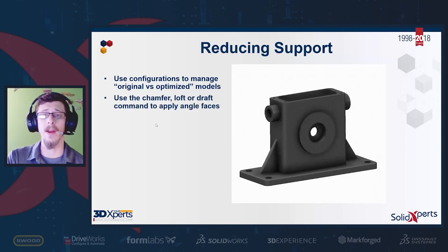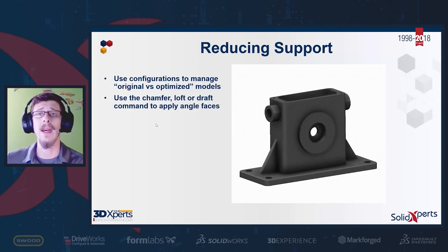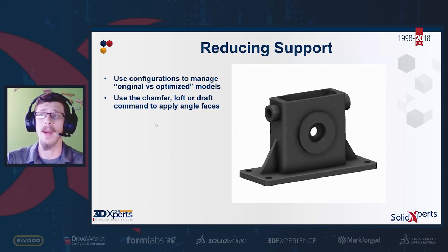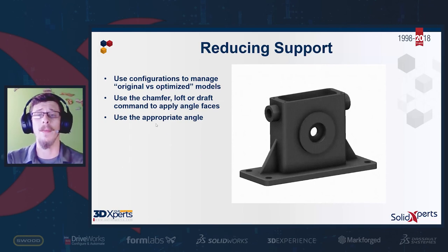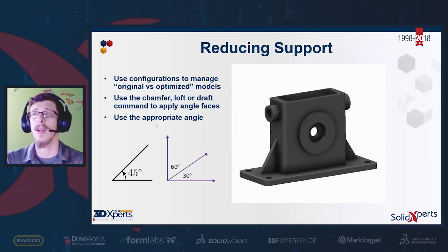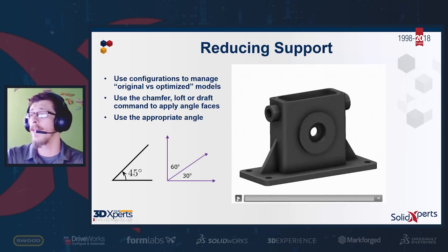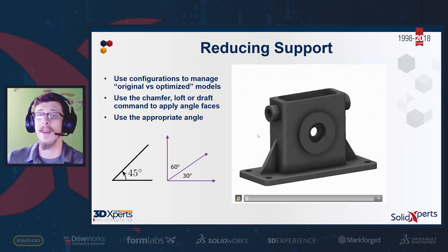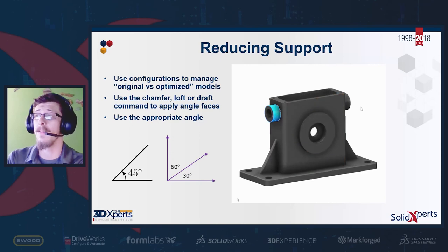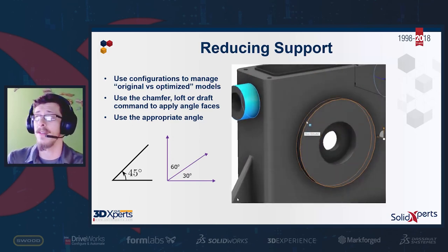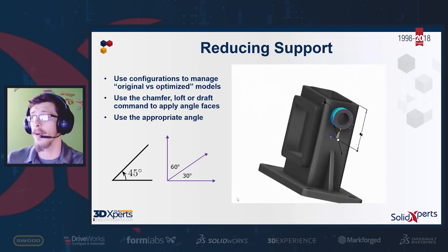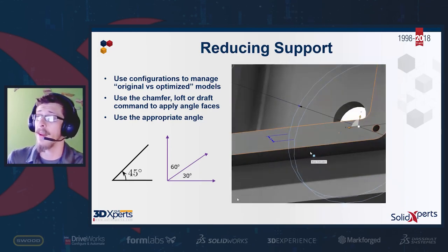To achieve overhang angles that don't need support, once you know the appropriate angle — say 45, 50, or 60 degrees — you can use chamfers, lofts, and draft commands to type in that angle and create features that don't need supports. Here are a couple of faces that need supports which we can modify. We can see steep, 90-degree overhangs.